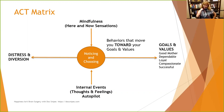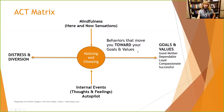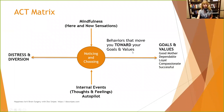Moving through the matrix: we know our goals and values, we know our destination, and we know that every time an event comes up we'll have automatic thoughts and feelings — some good, some not. We know we can be mindful of our thoughts and behaviors. So the first thing to identify is: in general, what behaviors do you do or could you do that would move you toward your goals and values? Jot those down in the upper quadrant — behaviors that could move you toward your goals and values.